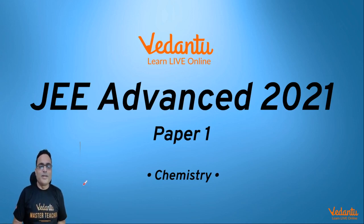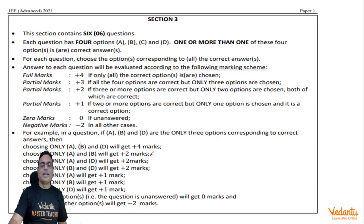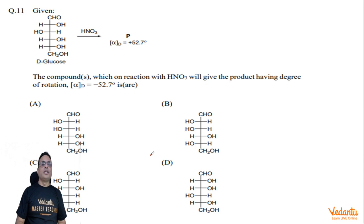Hi guys, this is Vinay Pandey. Let us discuss JEE Advanced 2021 Paper 1, Chemistry Question Number 11. They have given D-glucose, which reacts with nitric acid to form a product called P. P has a specific rotation of alpha plus 52.7 degrees.